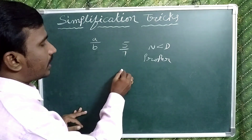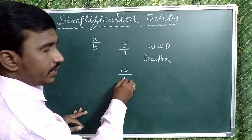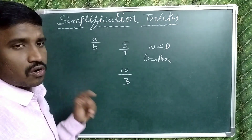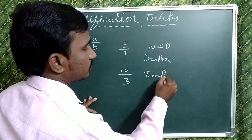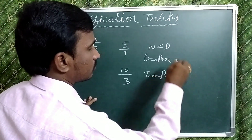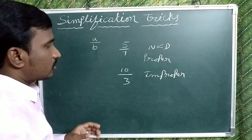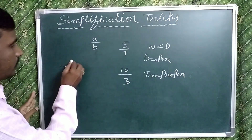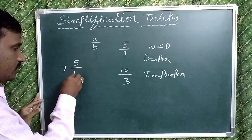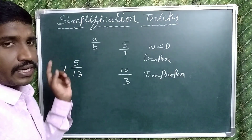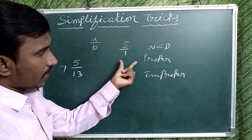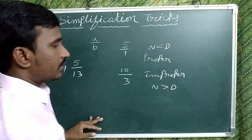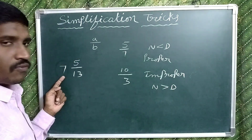If the numerator is greater than the denominator, that type of fraction is called an improper fraction. And if it is a combination of one whole number and one proper fraction, that type of fraction is called a mixed fraction. So to recap: if the numerator is greater than the denominator, it is an improper fraction; the combination of a whole number and a proper fraction is a mixed fraction.